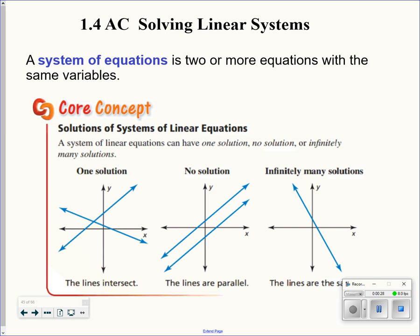A system of linear equations can have one solution, no solution, or infinitely many solutions. If I have one solution, you're talking about two lines that cross at one point. Think about two lines - they cross at the intersection. That point, whatever that x and y coordinate is, is the solution to the system.